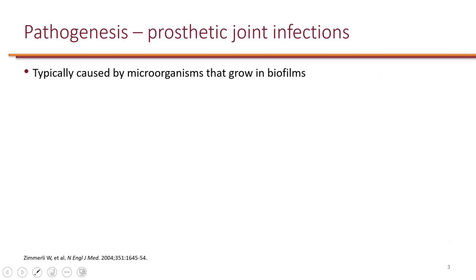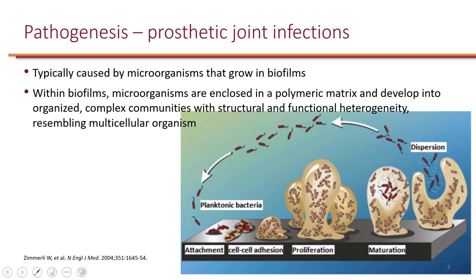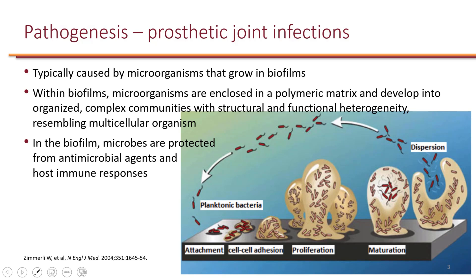Prosthetic joint infections are often difficult to treat because the offending bacteria, often staphylococcus species, form biofilm. Biofilm is essentially a polymeric matrix that allows single-cell bacteria to behave like multi-cellular organisms within the complex communities they form within the biofilm. Inside the biofilm, these bacteria are protected from the host immune cells as well as antibiotics, because most antibiotics cannot penetrate the biofilm.